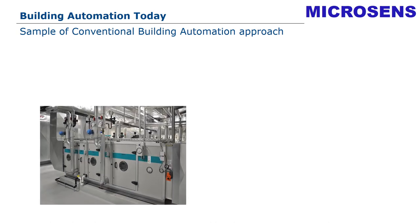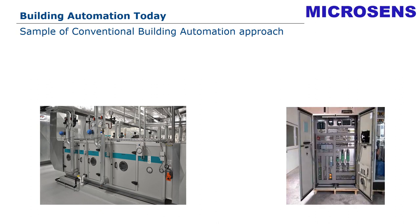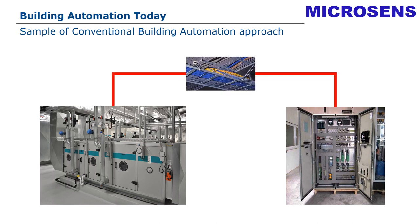A typical kind of installation looks like this. We have the ventilating unit shown on the left side. We have the control cabinet, which provides the automation functionality, usually by a PLC or a DDC controller, and both are connected over conventional cabling mounted in cable trays.